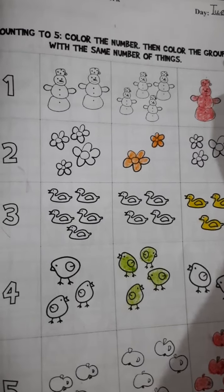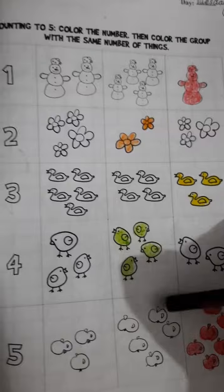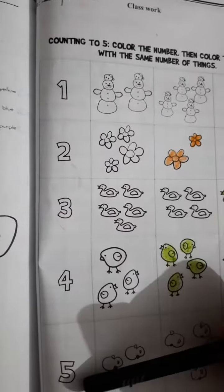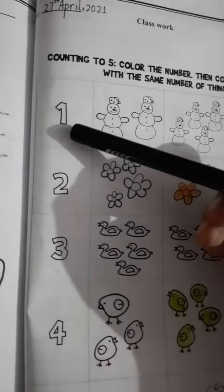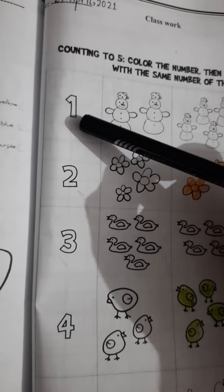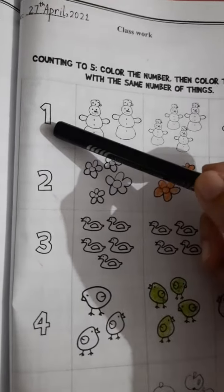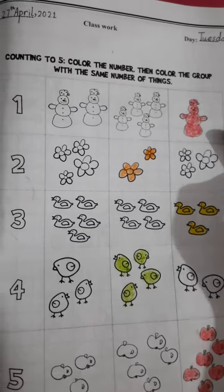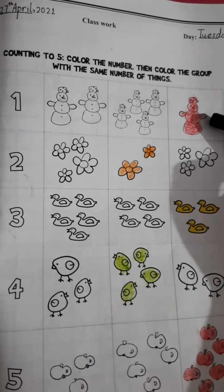First of all, color the number one. You will color in number one and count the object and then color it. Color only one object. This is number one, so find out the number one object and then color it, same as it is.